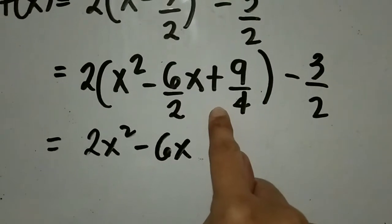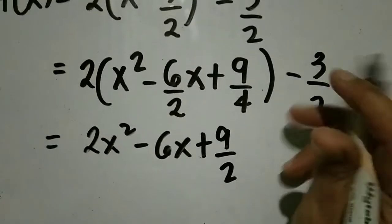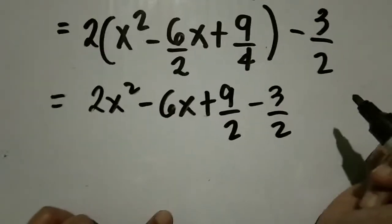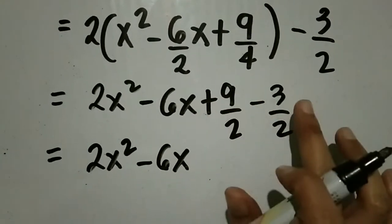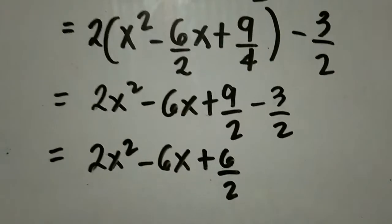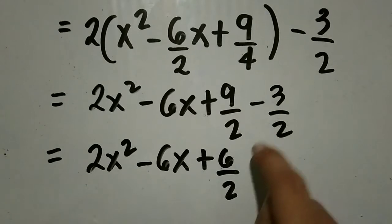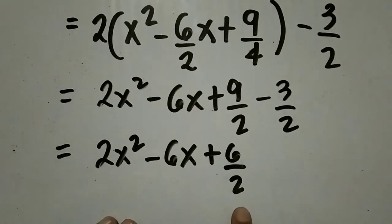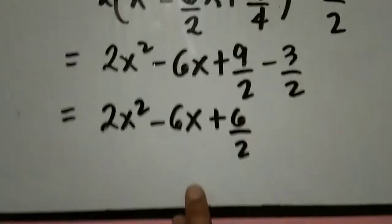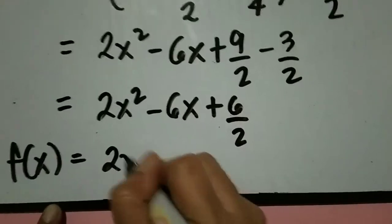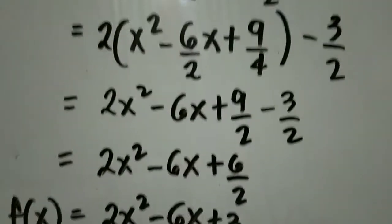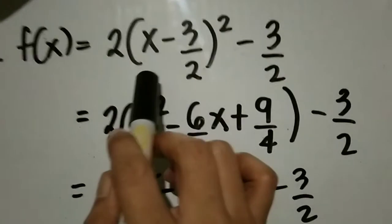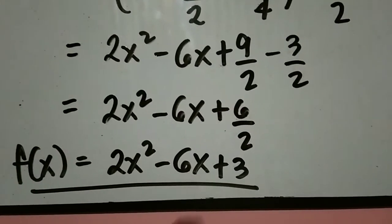Distributive property: 2 times x² is 2x², 2 times negative 6/2·x is negative 6x, 2 times 9/4 is 9/2. Then minus 3/2. Combine similar terms: 2x² - 6x, then 9/2 minus 3/2 equals 6/2 which equals 3. So the final answer is 2x² - 6x + 3. The quadratic function of f(x) = 2(x - 3/2)² - 3/2 is f(x) = 2x² - 6x + 3.